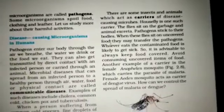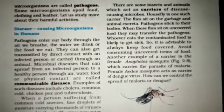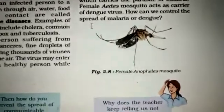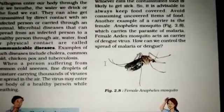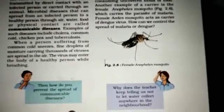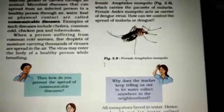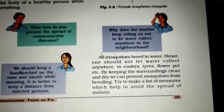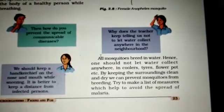Another example of a carrier is the female Anopheles mosquito, which carries the parasite of malaria. You can see on the screen the female Anopheles mosquito which generally spreads malaria. The female Aedes mosquito acts as a carrier of dengue virus. To control the spread of malaria or dengue, one should not let water collect anywhere — in coolers, tires, flower pots, etc. By keeping surroundings clean and dry, we can prevent mosquitoes from breeding.